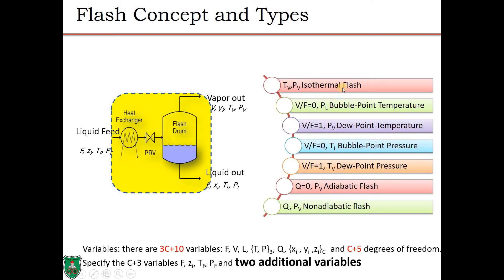There are seven types of flash calculations. The first is isothermal flash, where we specify the temperature and pressure of the vapor stream. Then four cases where we specify the vapor-to-feed flow rate (the vapor fraction): zero gives bubble point calculation, one gives dew point calculation, and we can switch between temperature and pressure to get bubble point pressure, bubble point temperature, dew point pressure, and dew point temperature. We can also specify no heat transfer and pressure, giving adiabatic flash, or the general non-adiabatic flash with heat transfer.